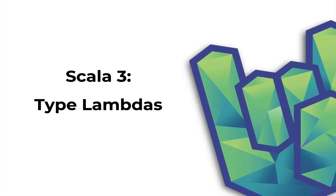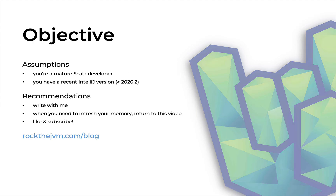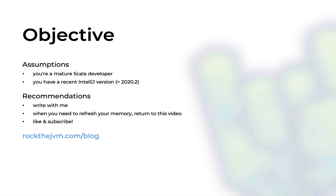Welcome back to Rock the JVM. I'm Daniel and in this video I'm going to talk about type lambdas in Scala 3. This video will be a little more difficult and a little bit more abstract, and this assumes that you are a more mature or experienced Scala developer. Ideally you would have watched the previous video which discusses types, kinds and type constructors. It serves as a preparation for this one, and I'm also going to attach the link in the description. Type lambdas are simple to express in Scala 3 but the ramifications are pretty deep.